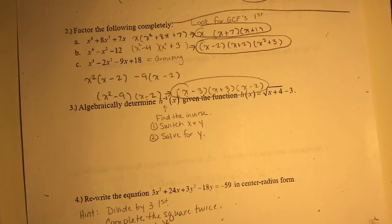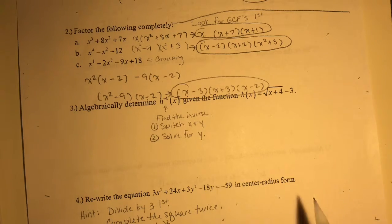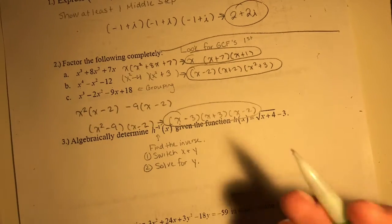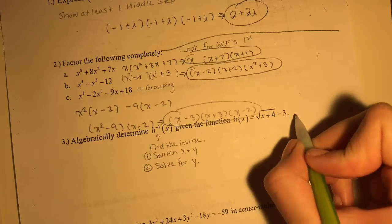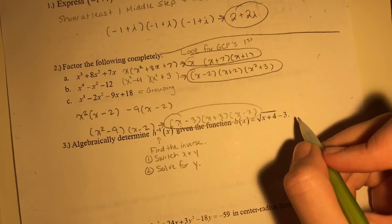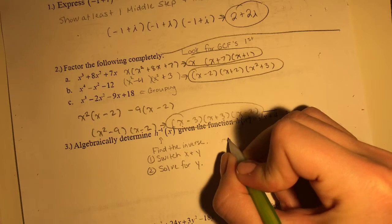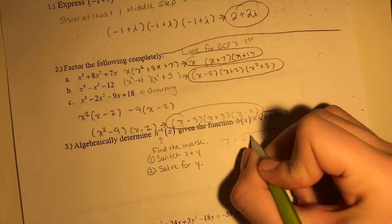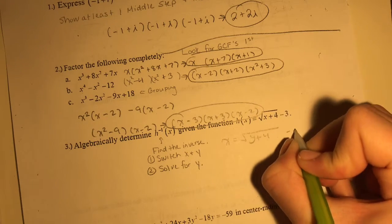Number three. Algebraically determine h⁻¹(x) given the function h(x) equals the square root of x+4 minus 3. So this is the inverse function. So in order to find the inverse function, we're gonna switch our y equals x+4 minus 4 minus y to x equals the square root of y+4 minus 3.